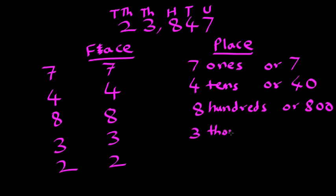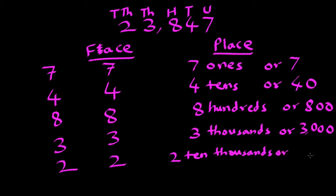3, 1000s or 3000. And 2, 10,000s or 20,000. So this is now the face and place value. Place value just keep on multiplying by 10 as you move forward, face value remains the same. Now let's look at one final example, which is a 6 digit number.